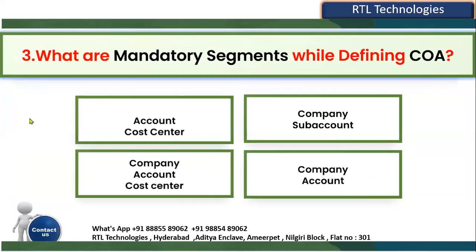The third question: what are the mandatory segments while defining the chart of accounting structure? When working with the ledger, we configure the chart of accounting structure where we combine a group of segments — a minimum of two mandatory segments, up to 30 segments can be configured. Which two segments are mandatory irrespective of the client or country where you are implementing Financials?